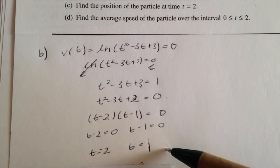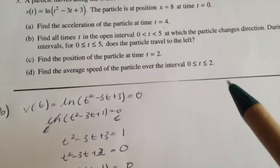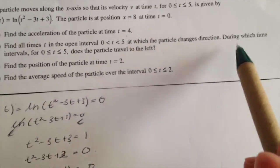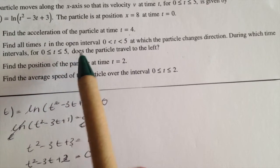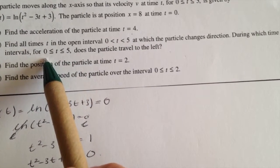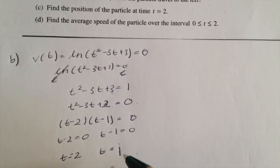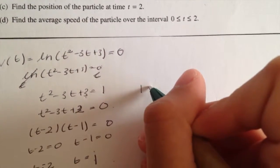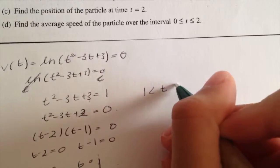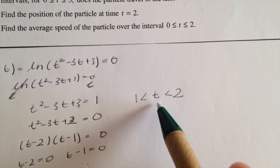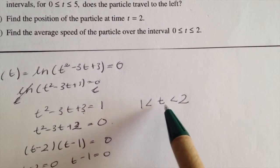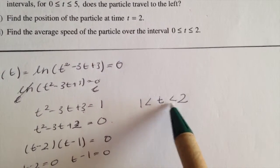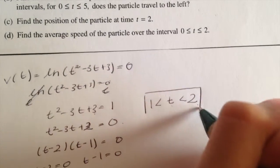Once you reach this point, you've got to answer the second part of the question: during which time intervals for 0 less than t less than 5 does the particle travel to the left? So you have t equals 2 and t equals 1. You put that into an interval: 1 less than t less than 2. So the particle is traveling to the left when 1 is less than t and t is less than 2. And that is your final answer.